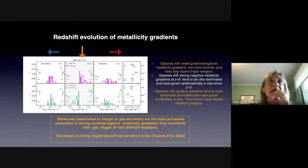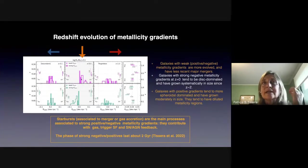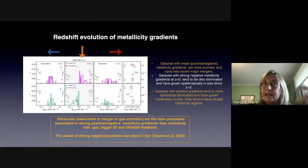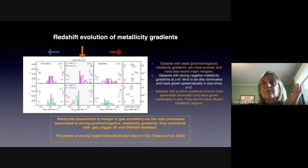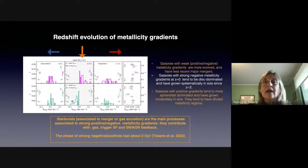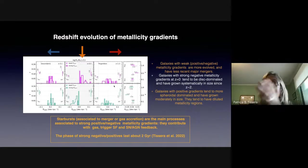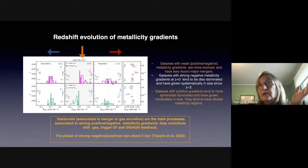We did this work for a subsample of galaxies to get more insight into the galaxies that have a strong positive metallicity gradient and a strong negative metallicity gradient — shown here as the teal line and the pink line. We selected galaxies at redshift 0.5 that at that redshift have a strong positive or strong negative metallicity gradient, searched for their progenitors at redshift 1 and their descendants at redshift 0.1, and studied the morphology, the evolution of the morphology and size of the galaxy, and of course the metallicity gradients.